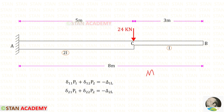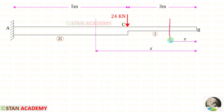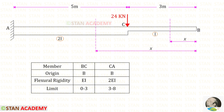In this beam, there are two different parts: BC and CA. So we have to make two sections, one in BC and one in CA. I have made both sections at a distance of x from point B. Now let us make a table. In the table, first let us enter the members: BC and CA. For both sections, the origin is B.